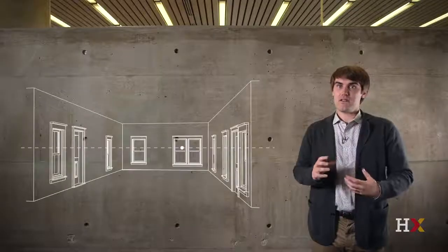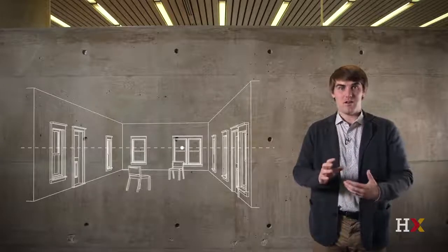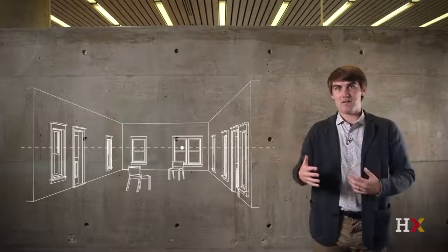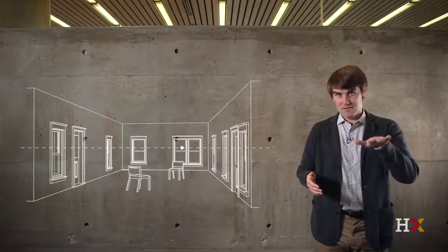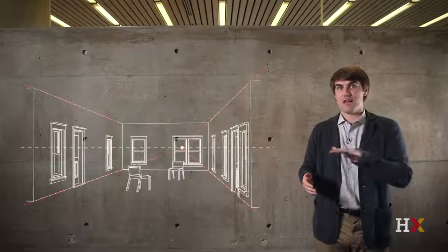So we can populate the space with tables and with furniture, and we see how objects that are the same size, that we know are the same size, actually look different. The chair that's in the foreground is much larger than the chair that's farther back, in the background. Because again, the lines that are parallel are converging at infinity.